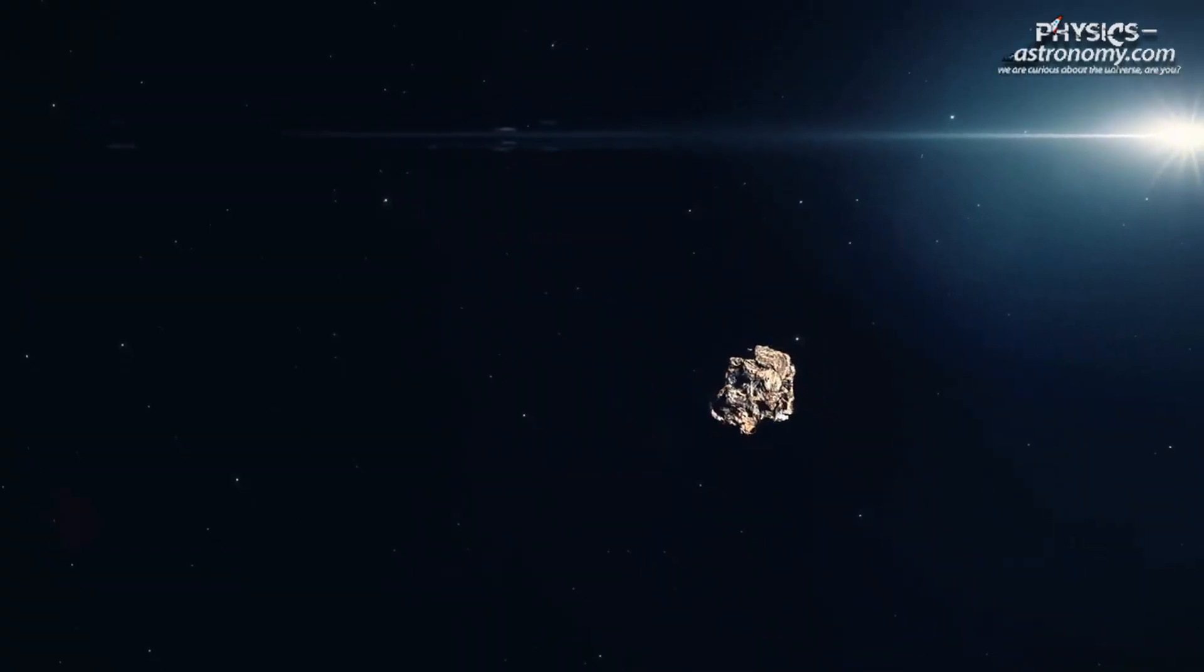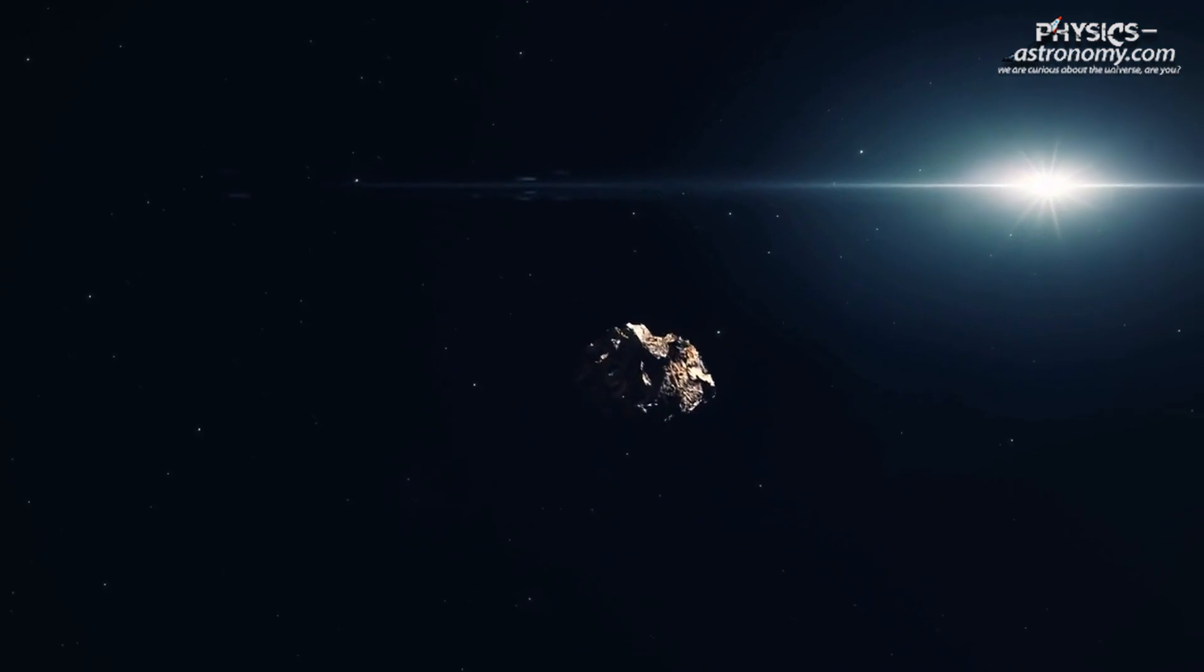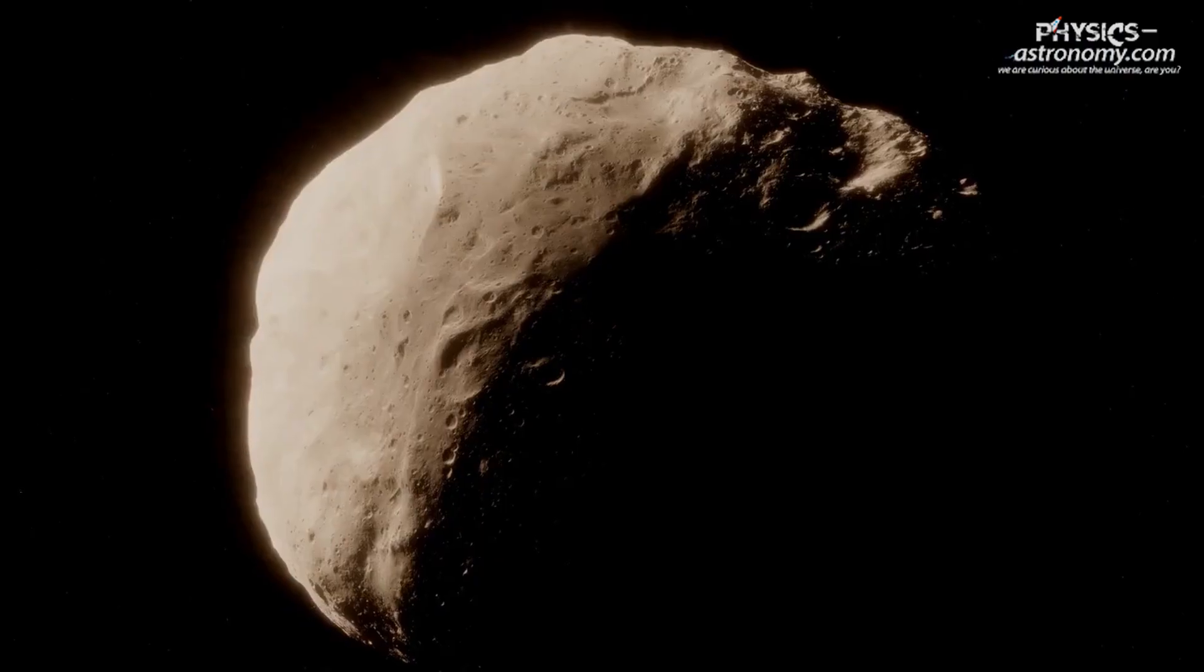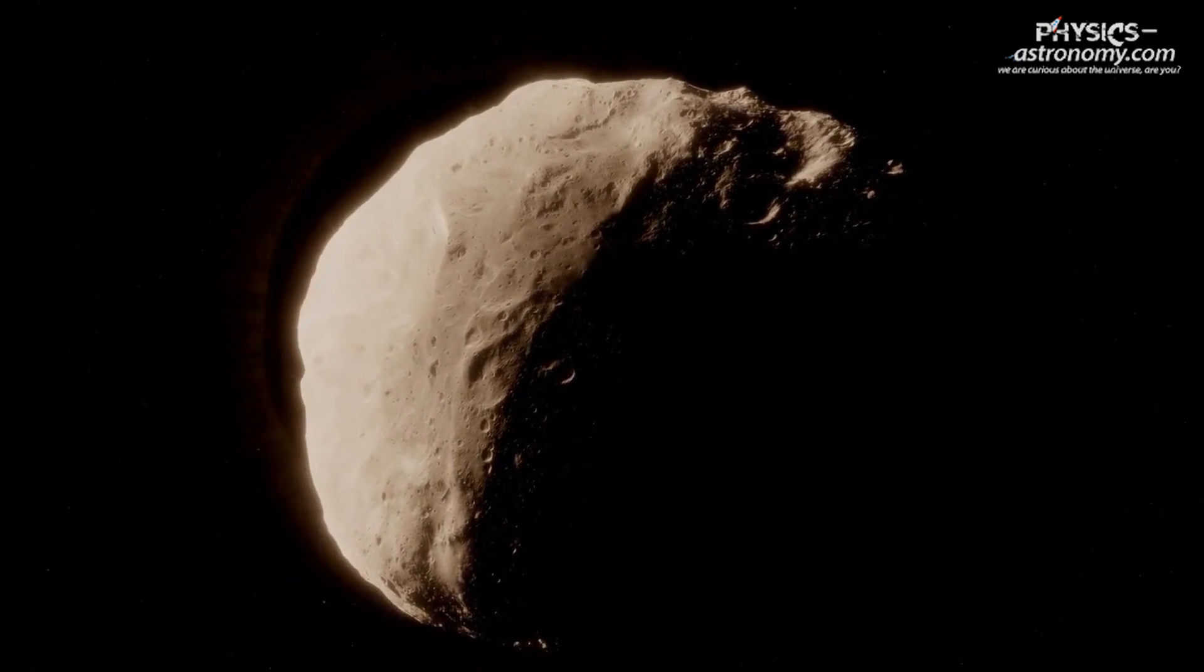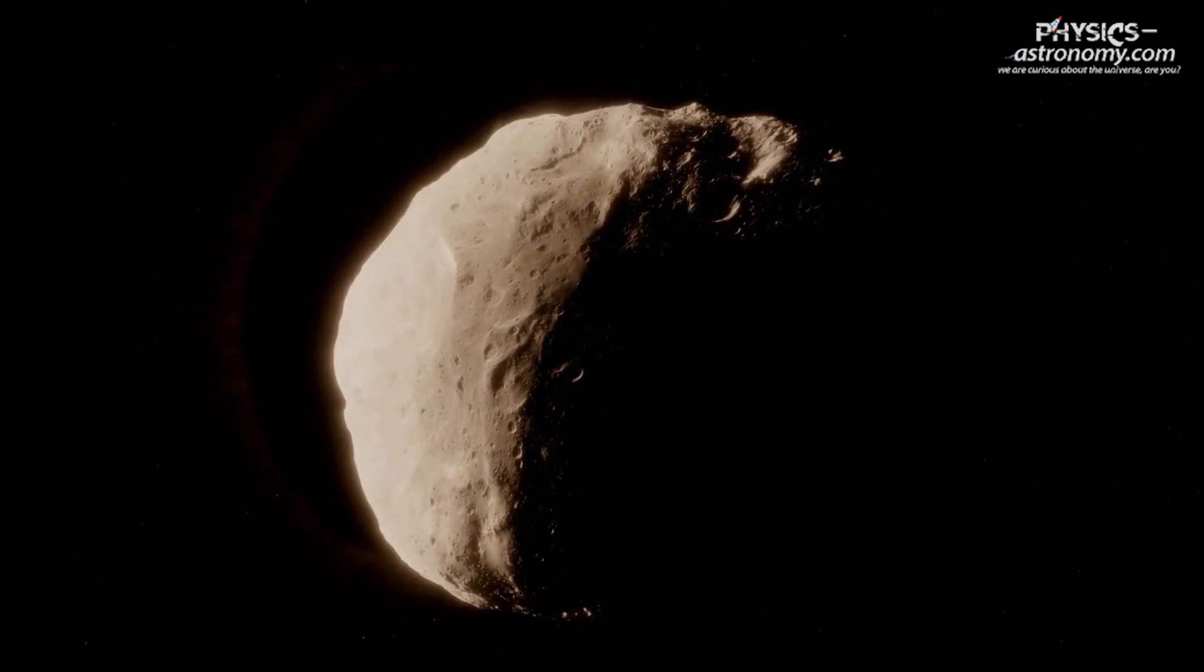Unlike the Moon, Cruthni does not orbit Earth directly, and its relationship with our planet is more accurately described as an orbital resonance. This means that Cruthni and Earth share a synchronized dance around the Sun, where their respective gravitational forces influence each other's orbits.